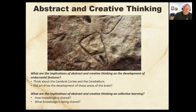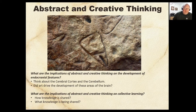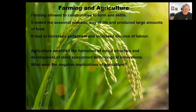Abstract thinking would literally help select for a larger brain. Imagine a caveman makes a beautiful carving — a cave girl is amazed — and that drives mate selection. That's natural selection driven by cultural evolution. The implications also extend to collective learning: how is knowledge shared through language and comprehension? This brings us to farming and agriculture, which we'll cover next.